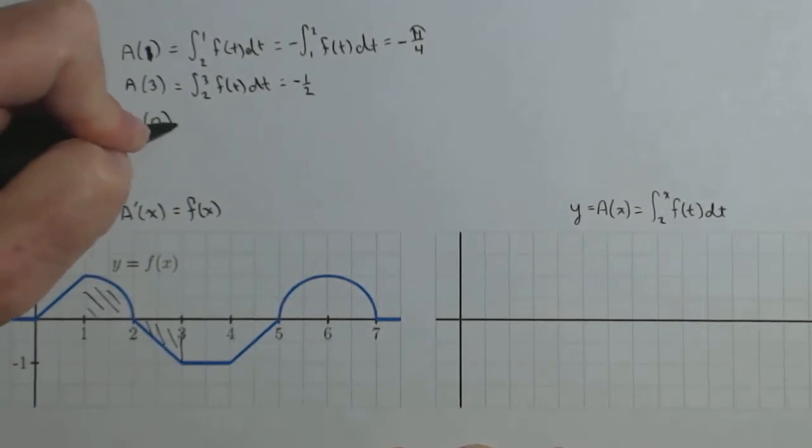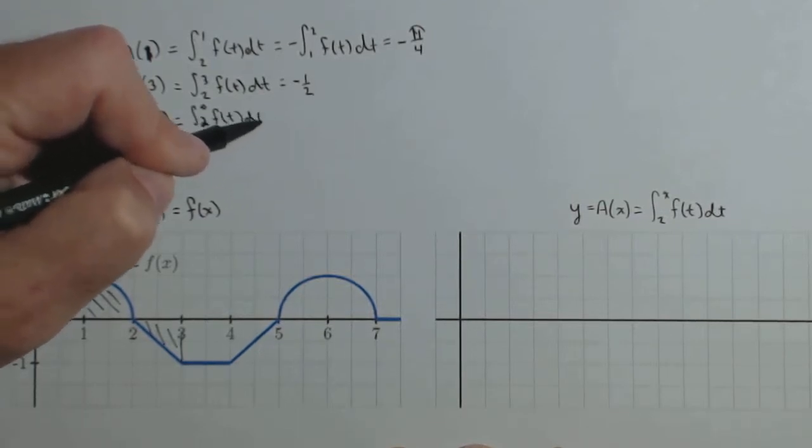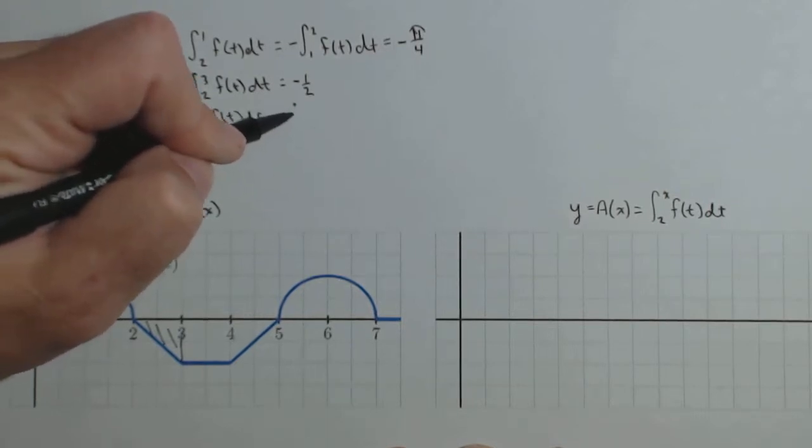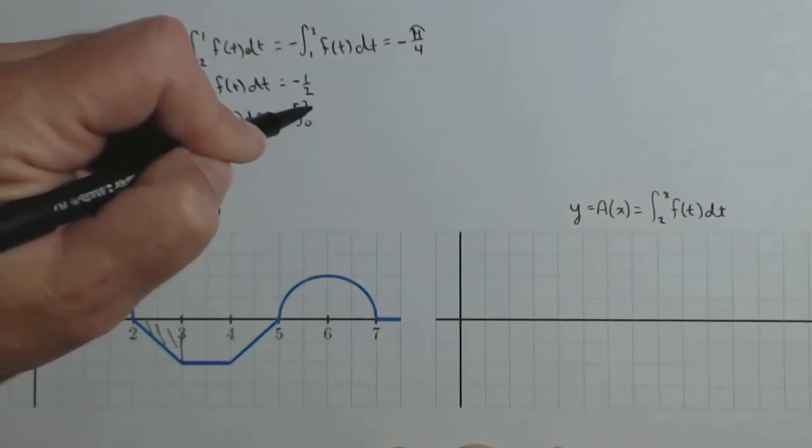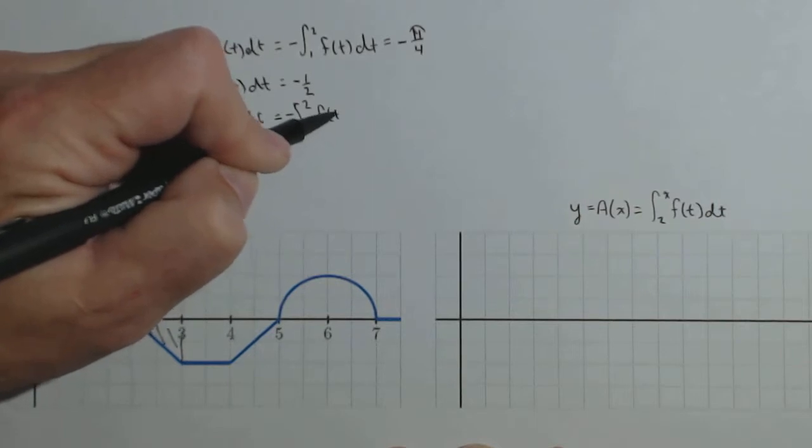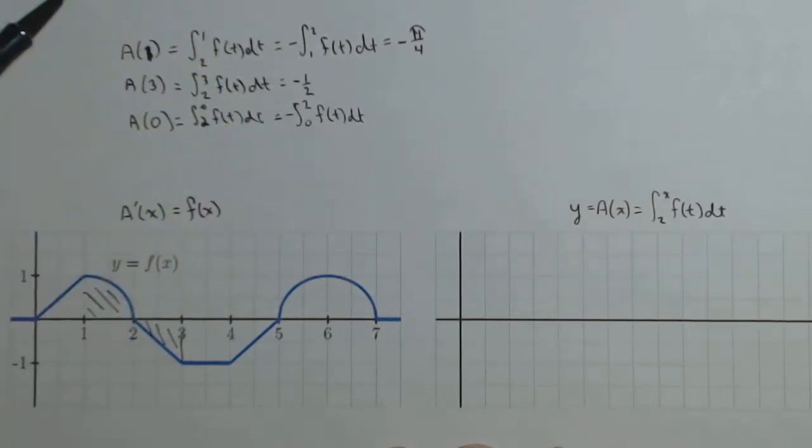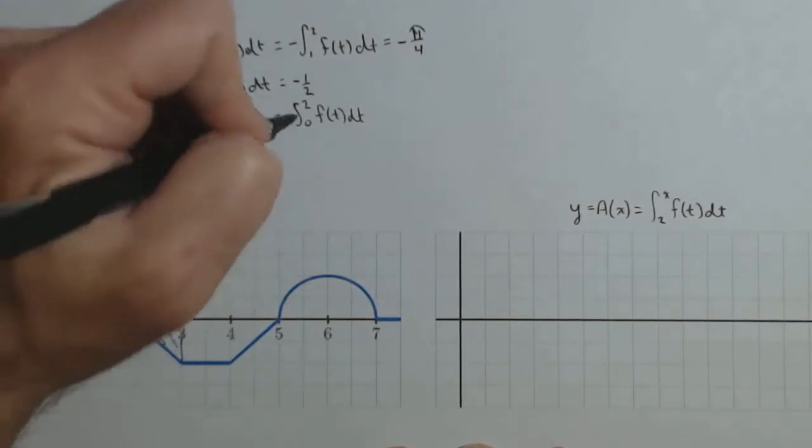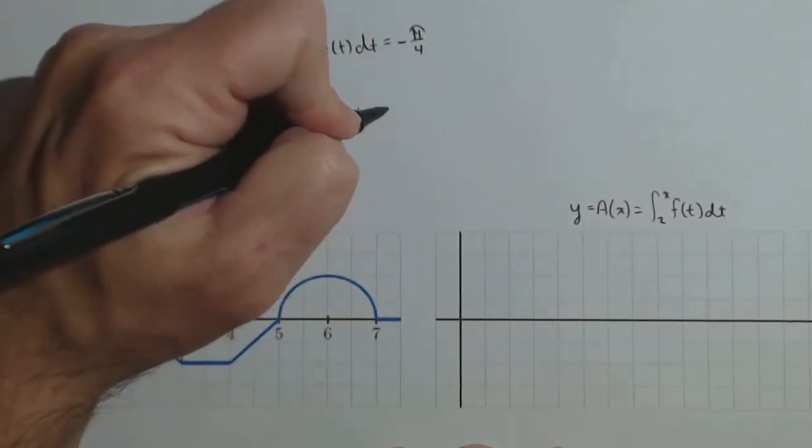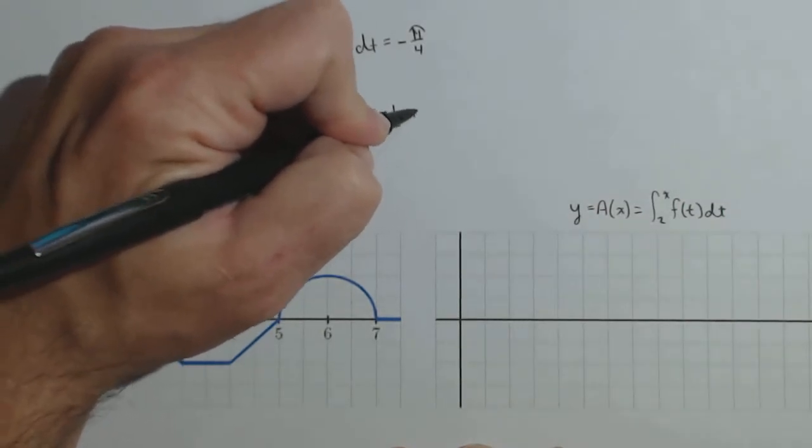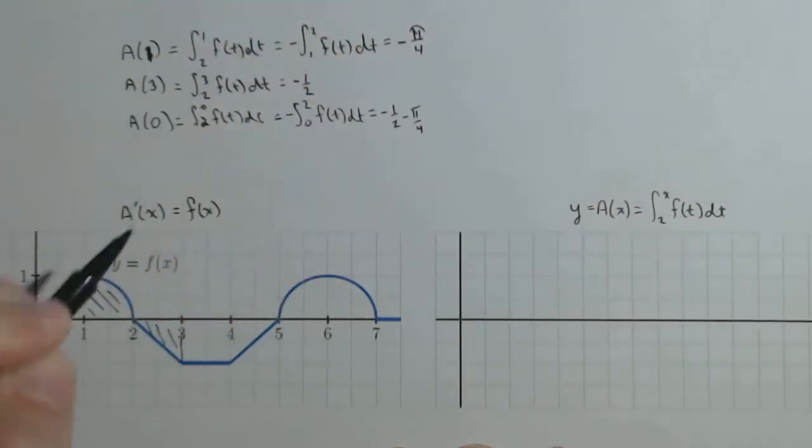So we can start looking at the accumulations so that we can actually sketch the graph of a(x). So let's find some more values. So a(0) is the integral from 2 to 0 of f(t)dt. And we'll make it negative and swap those limits, 0 to 2 of f(t)dt. And remember we already found 1 to 2, so we actually only need to find 0 to 1, which is a half, but it's going to be made negative. So it's negative 1 half minus pi over 4.